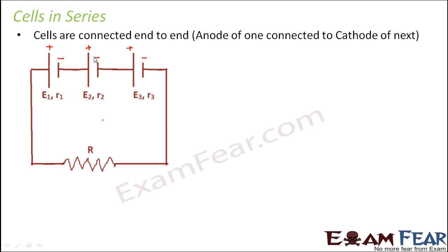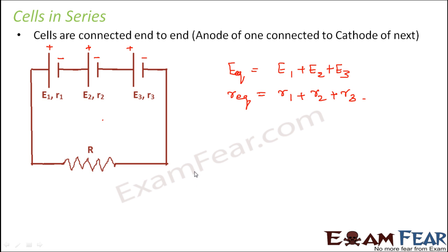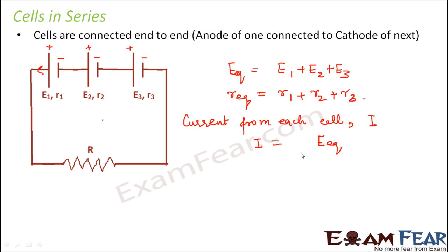In a series connection, if we have to calculate the equivalent EMF of the cell, the equivalent EMF would be equal to the sum of the EMFs of all three cells: E equivalent equals E1 plus E2 plus E3. The equivalent internal resistance of the three cells would follow the same concept as resistors in series: R equivalent equals R1 plus R2 plus R3. The current I from each cell would be equal to the net EMF, that is E equivalent, divided by the net resistance R equivalent.